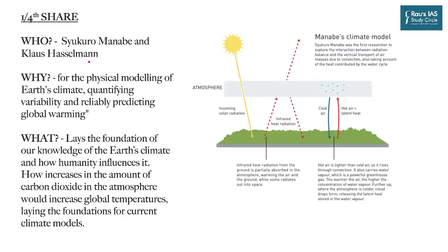Syukuro Manabe and Klaus Hasselmann have contributed to the physical modeling of Earth's climate, quantifying variability and reliably predicting global warming. Their work lays the foundation of our knowledge of Earth's climate and how humanity influences it — specifically, how increases in the amount of carbon dioxide in the atmosphere increase global temperatures, laying the foundations for current climate models. The Nobel Laureate Manabe was the first researcher to explore the interconnection between the radiation balance and the vertical transport of air masses due to convection, also accounting for the heat contributed by the water cycle.